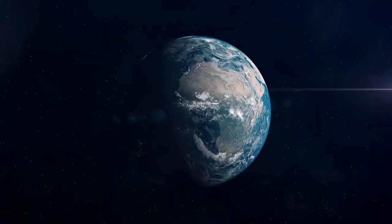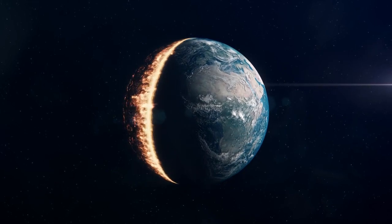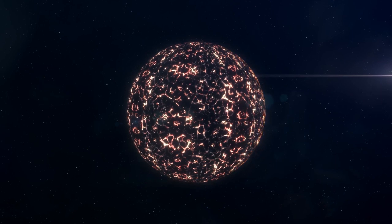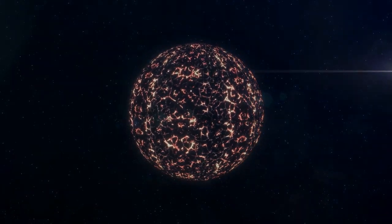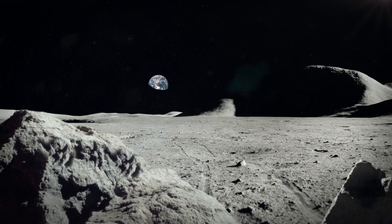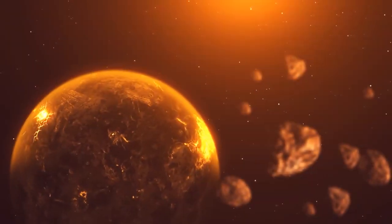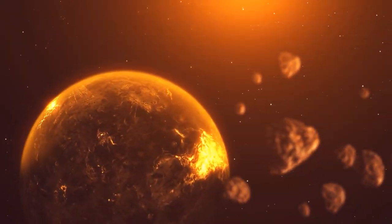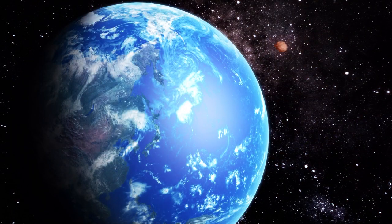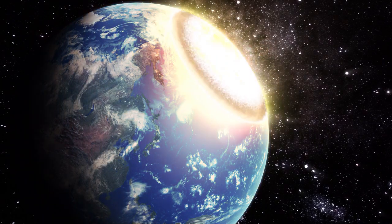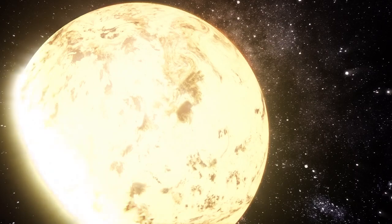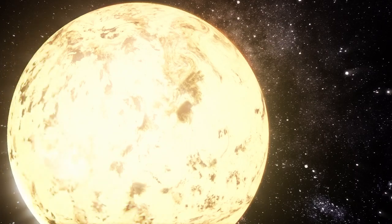Perhaps the most unsettling aspect of the killer moon theory is that it could happen to us too. As our moon continues to drift away, the likelihood of a catastrophic collision increases. It's a reminder that our existence is fragile and that we're at the mercy of the universe. The theory of killer moons adds another layer of complexity and mystery to the already perplexing paradox. While it may be unsettling to consider the possibility that life is being snuffed out before it has a chance to thrive, it's a reminder of the fragility of our existence and the vastness and unpredictability of the universe.